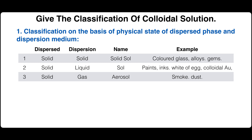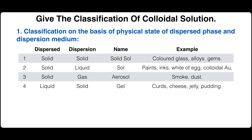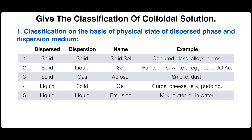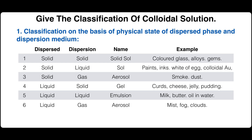If the dispersed phase is liquid and the dispersion medium is solid, a gel is formed; examples are curd, cheese, jelly, and puddings. If the dispersed phase is liquid and the dispersion medium is liquid, an emulsion is obtained; examples are milk, butter, and oil. If the dispersed phase is liquid and the dispersion medium is gas, an aerosol is formed; examples are mist, fog, and clouds.